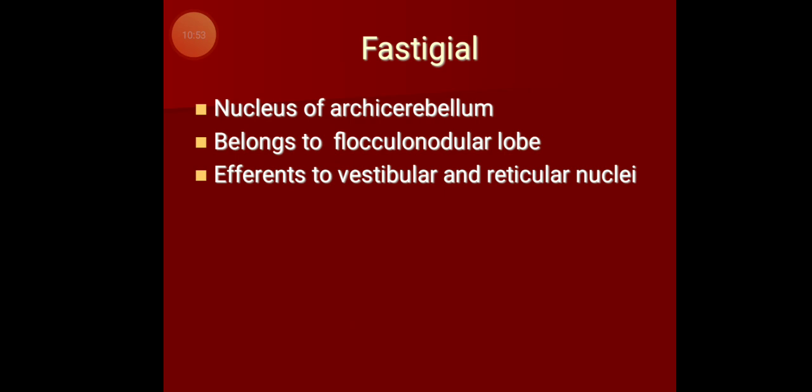The fastigial nucleus is the nucleus of the archicerebellum and belongs to the flocculonodular lobe. Information from the flocculonodular lobe reaches the fastigial nucleus, and from there efferents pass mainly to the vestibular nucleus and reticular nuclei. All four intracerebellar nuclei — dentate, emboliform, globose, and fastigial — each belong to a specific morphological division of the cerebellum: archicerebellum, paleocerebellum, or neocerebellum.